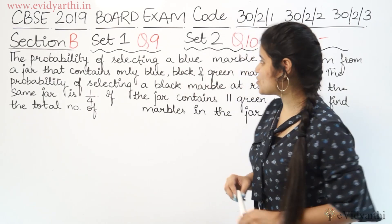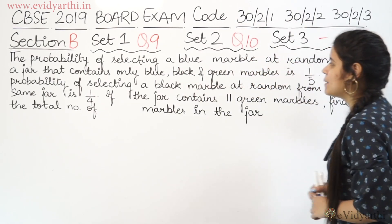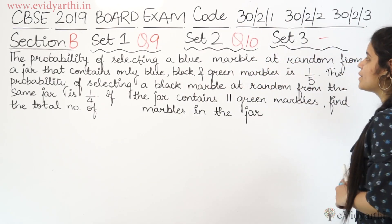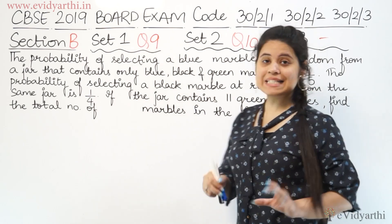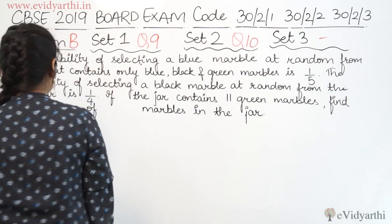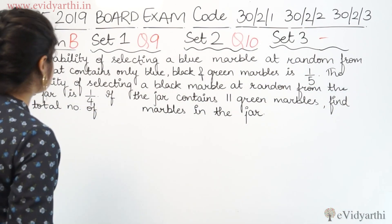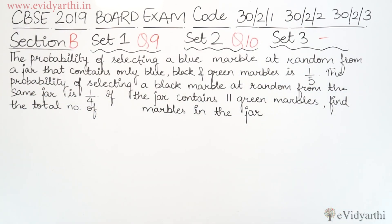Now coming to the next question — this is question number 9 of set 1, question number 10 of set number 2 and set number 3. The question says: the probability of selecting a blue marble at random from a jar that contains only blue, black and green marbles is 1/5.